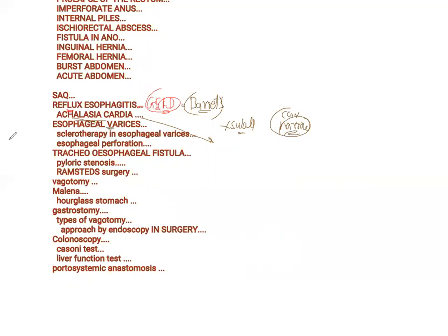Esophageal varices are a complication of portal hypertension and require sclerotherapy. Esophageal perforation can also occur because of a foreign body or instrumentation — the rigid esophagoscope can perforate. TOF — tracheoesophageal fistula — is a very common congenital anomaly which leads to difficulty in feeding because food particles can go into the trachea, causing the patient to go into gasping.